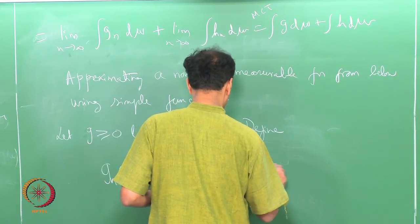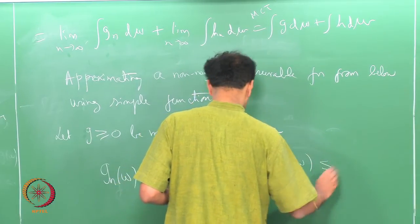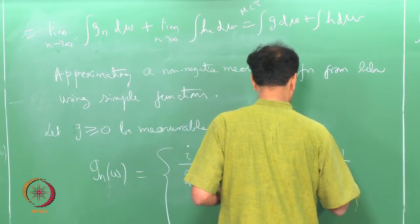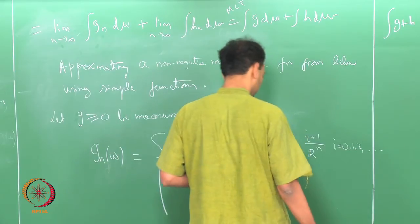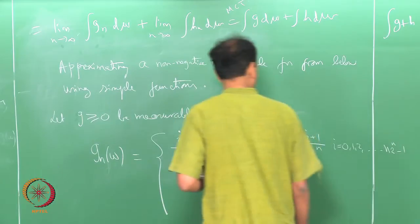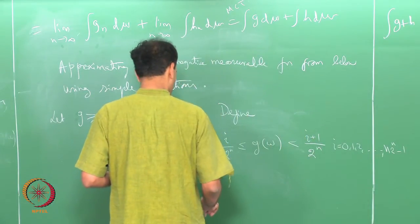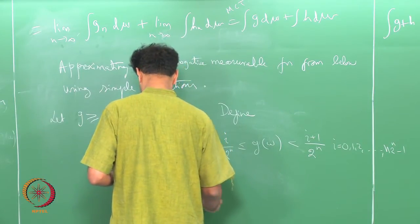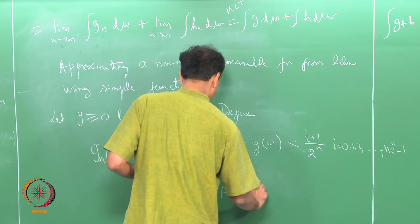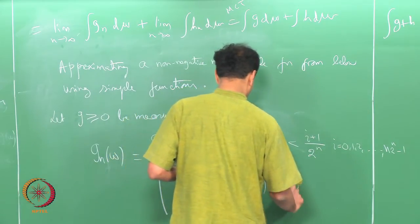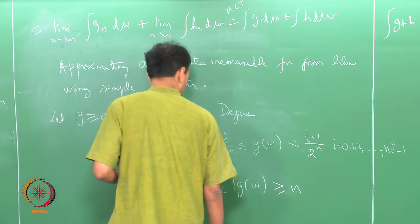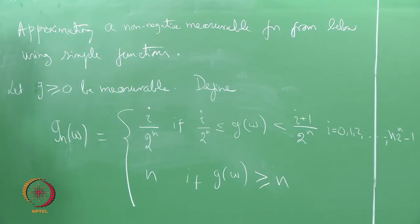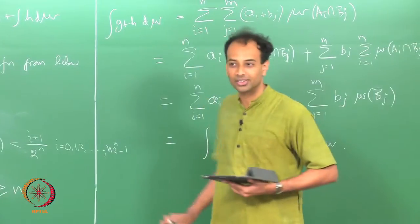We define g_n of omega equal to i over 2 raised to n, if i over 2 raised to n is less than or equal to g of omega, which is less than i plus 1 over 2 to the n, for i equals 0, 1, 2, ... up to n times 2 to the n minus 1. And if g of omega is bigger than or equal to n, we define it as simply n.